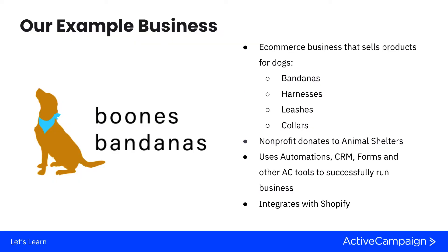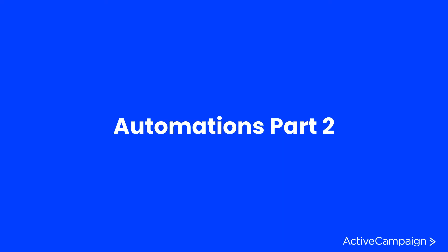Our example business is Boone's Bandanas, an e-commerce business that sells products for dogs — bandanas, harnesses, leashes, and collars. We're also a non-profit: we donate to animal shelters, and every month we highlight a specific animal shelter in our area and hold adoption events with donated bandanas. We use a lot of ActiveCampaign functionality including advanced features, and we integrate with Shopify, enabling powerful integrations for e-commerce stores.